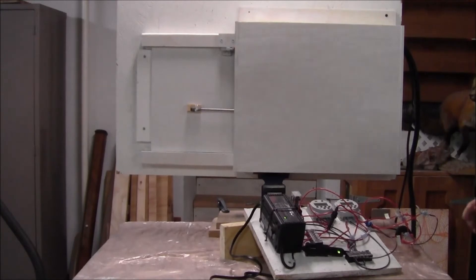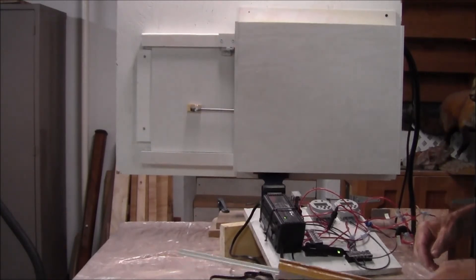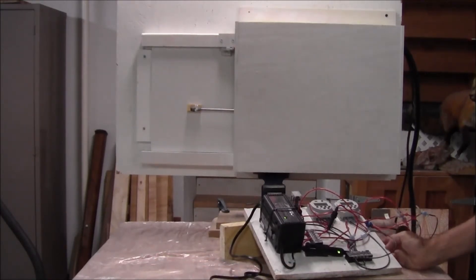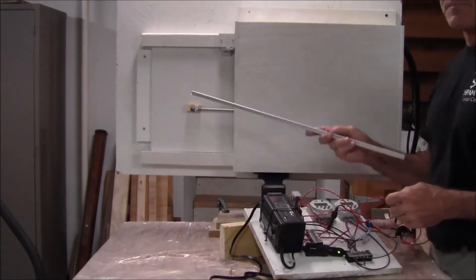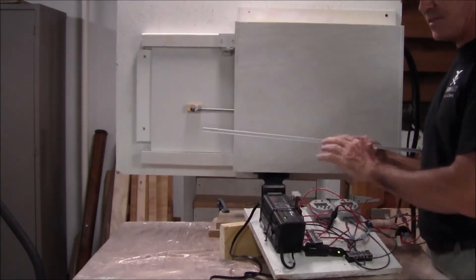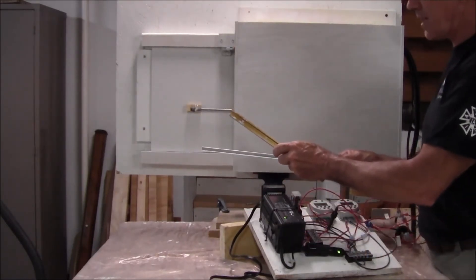This is my second chicken coop door that I made. Electronics are all the same. The only difference in this one and the very first one that I built is I used a t-track instead of the channel track that I had on the very first video.